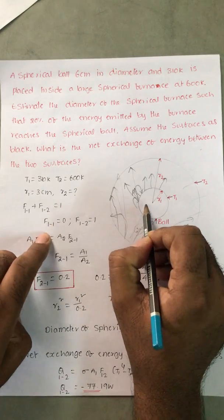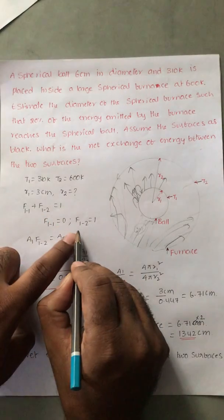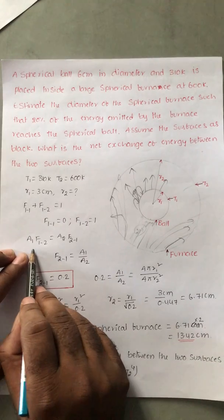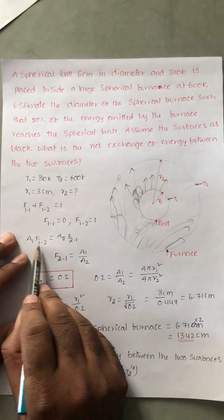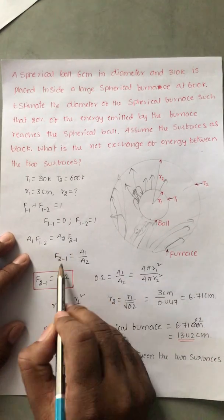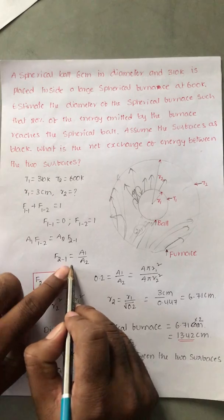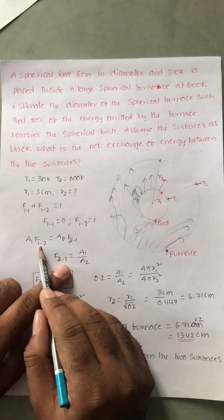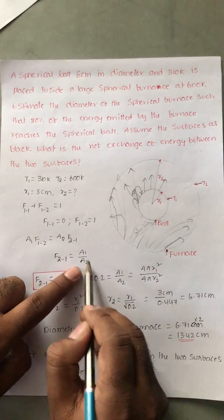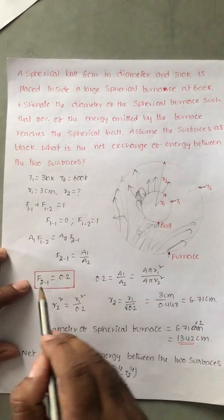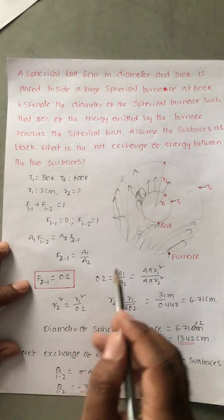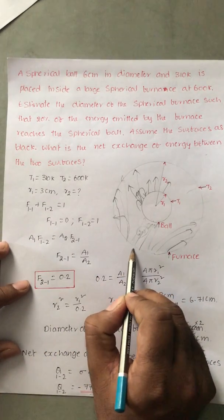Applying the reciprocity rule: A1 F12 equals A2 F21, so F21 equals A1 divided by A2, multiplied by F12. Since F12 is 1, F21 equals A1 by A2. It is given that F21 equals 0.2, meaning 20% of the energy from surface 2 strikes surface 1.